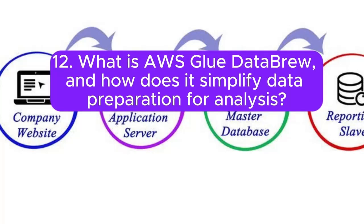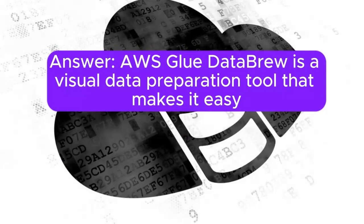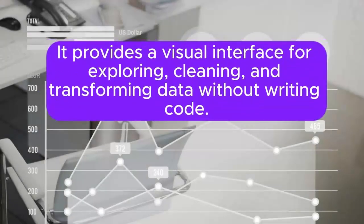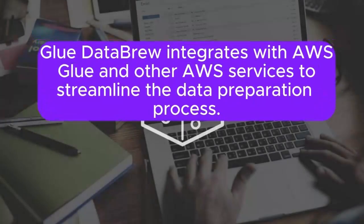12. What is AWS Glue DataBrew, and how does it simplify data preparation for analysis? Answer: AWS Glue DataBrew is a visual data preparation tool that makes it easy for data analysts to clean, normalize, and transform data for analysis. It provides a visual interface for exploring, cleaning, and transforming data without writing code. Glue DataBrew integrates with AWS Glue and other AWS services to streamline the data preparation process.